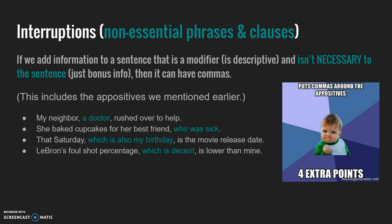Different kinds of interruptions in the middle or ends of sentences also get commas — not just appositives, but non-restrictive modifiers. For example: my neighbor, who's a doctor; my best friend, who was sick; this Saturday, which is also my birthday; his foul shot percentage, which is decent. These add-ons are interruptions containing bonus information that's not critical to the sentence, so they get commas.